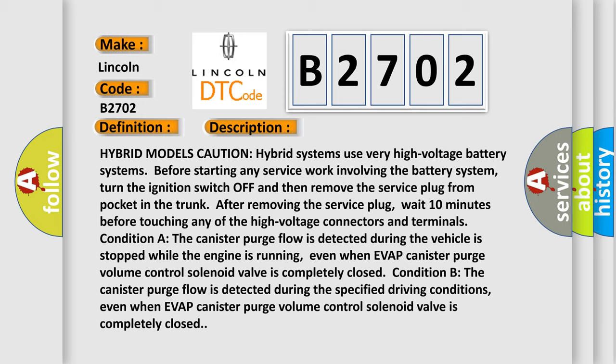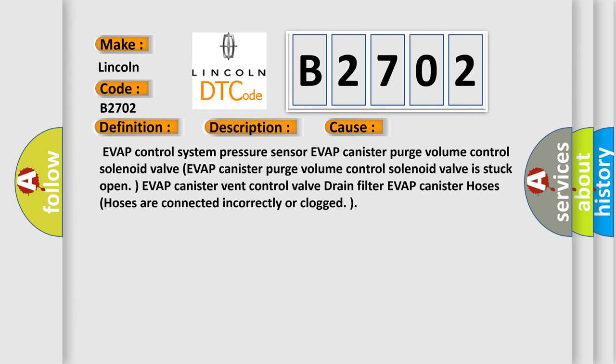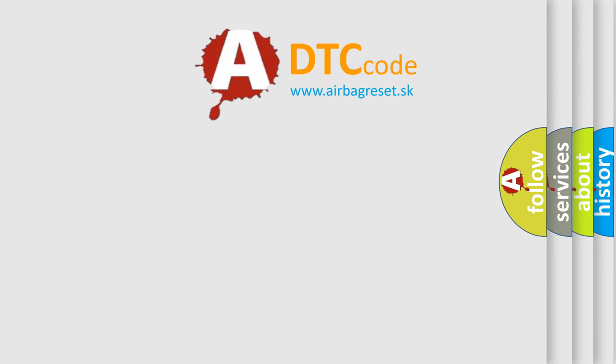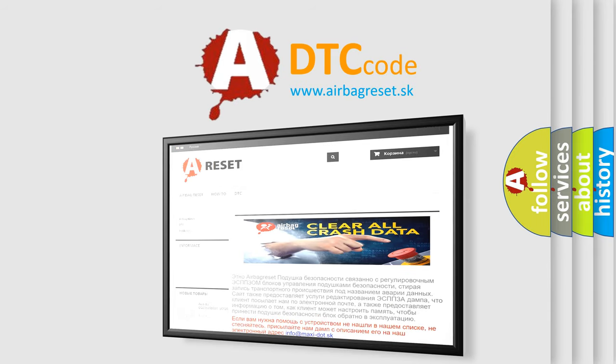Condition B: the canister purge flow is detected during the specified driving conditions, even when the EVAP canister purge volume control solenoid valve is completely closed. This diagnostic error occurs most often in these cases: EVAP control system pressure sensor, EVAP canister purge volume control solenoid valve stuck open, EVAP canister vent control valve, drain filter, EVAP canister hoses connected incorrectly or clogged. The airbagreset website aims to provide information in 52 languages. Thank you for your attention and stay tuned for the next video.